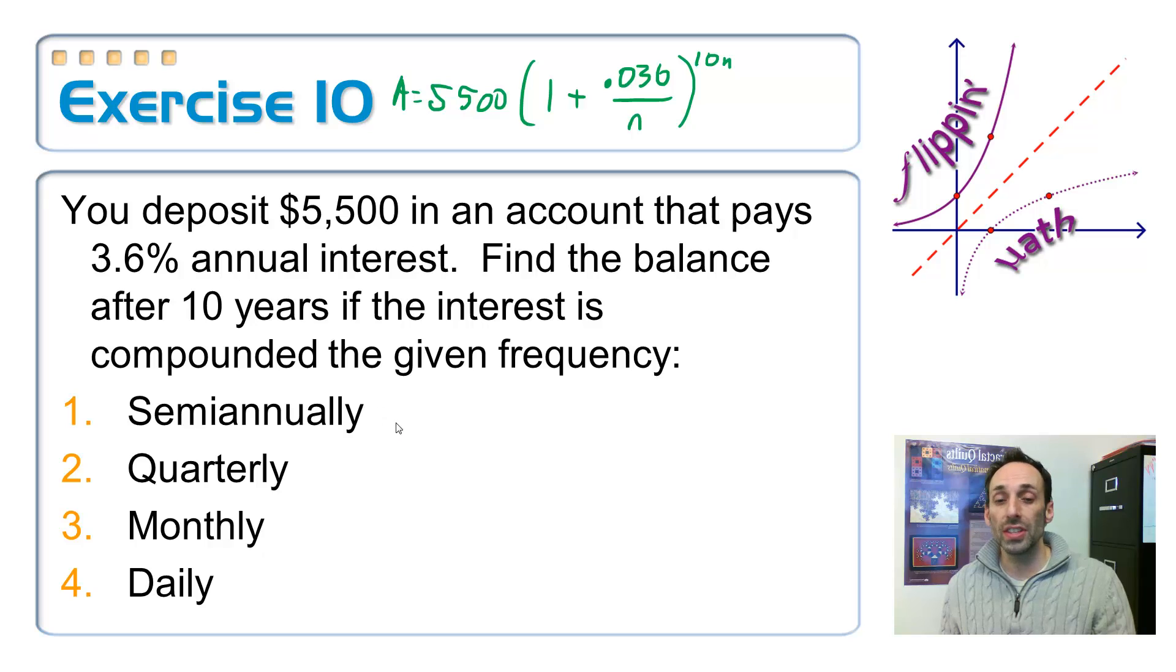So now I'm just going to call up my calculator and put this in with different N values. So N on semi-annually, just like in Victoria's Secret, which happens twice a year, N is equal to 2. Quarterly, N is equal to 4 times a year. Monthly, N is equal to 12. And daily, I think there's 360 days in a year, right? 360, if you're Babylonian, 365 days.